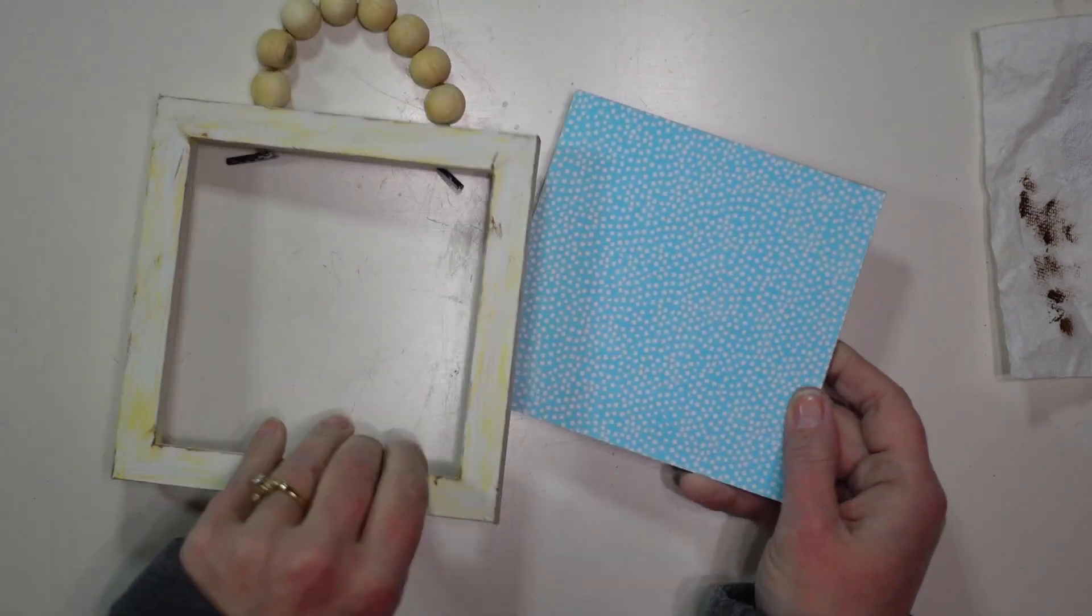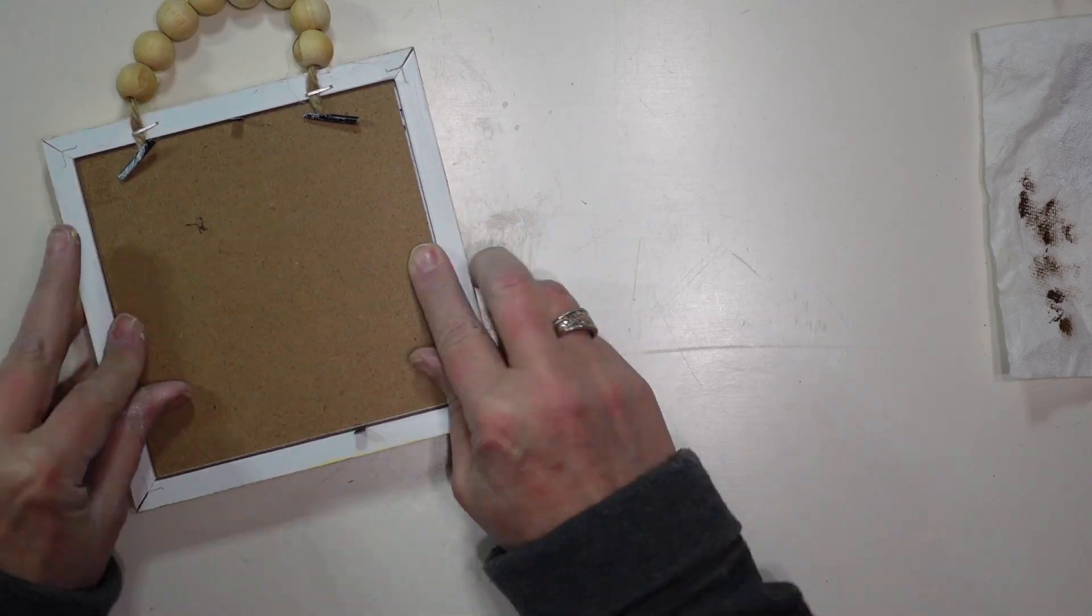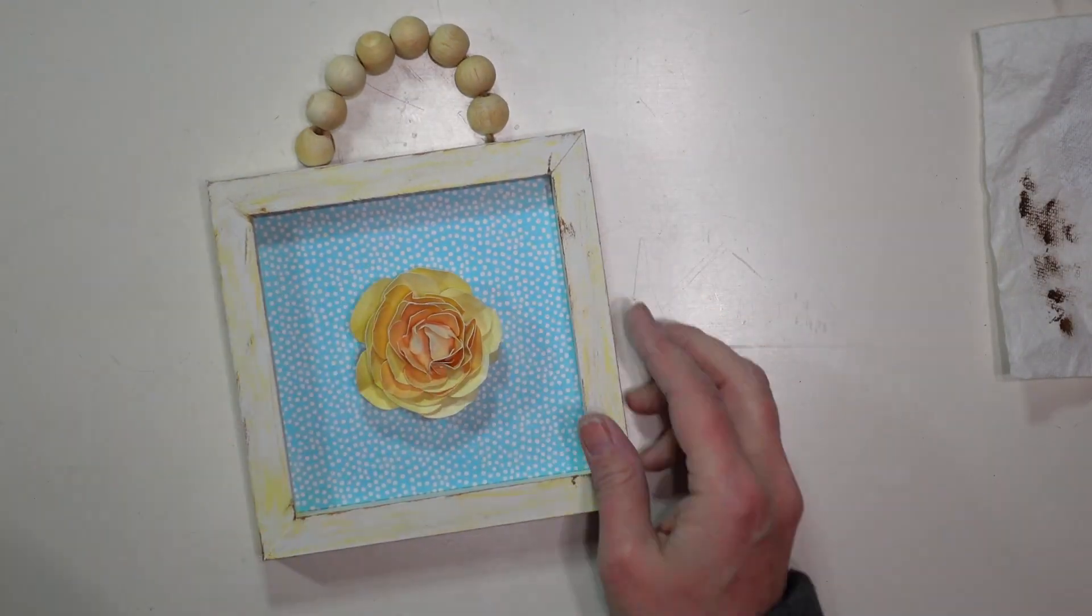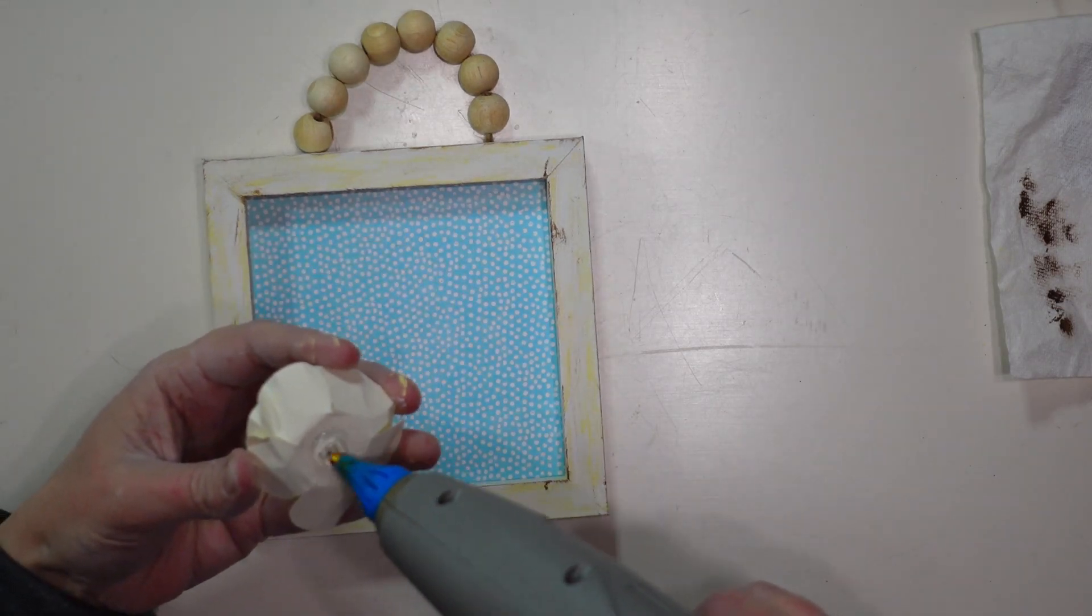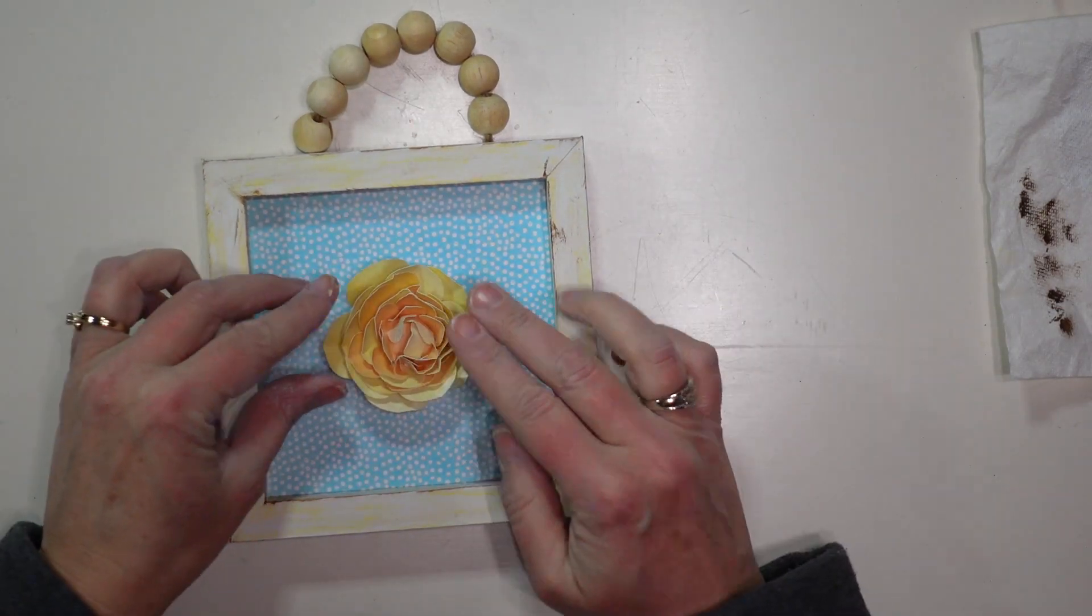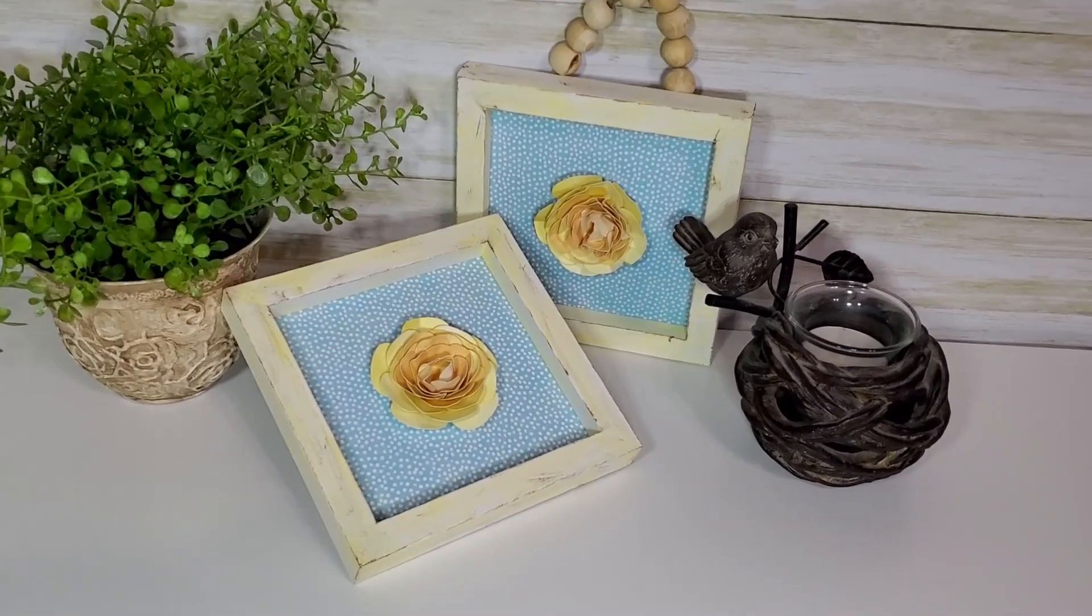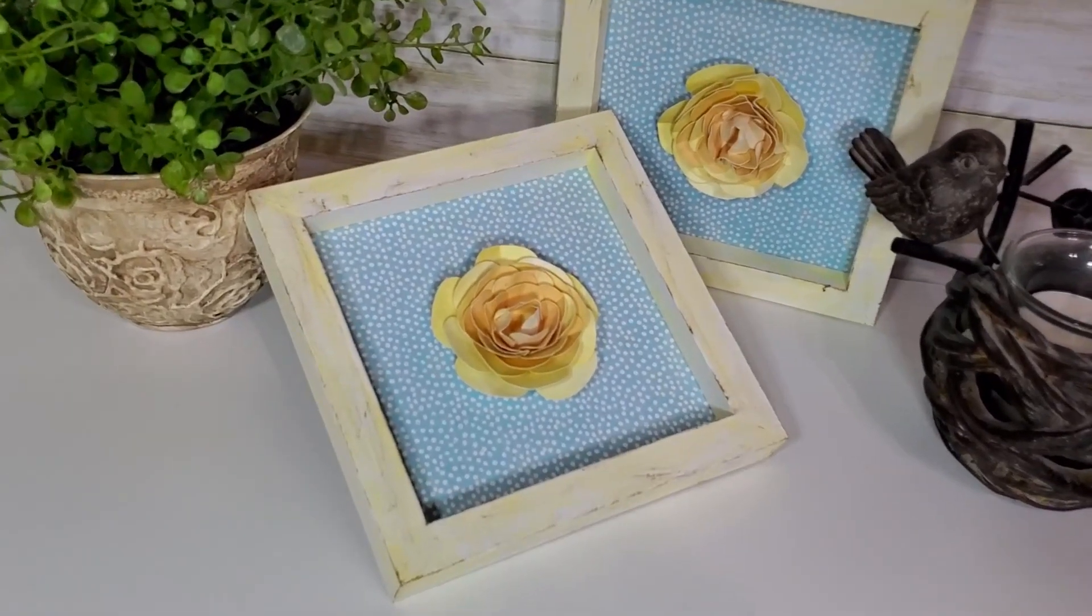Then I will add that right back into the picture frame and glue my flower to the center and this piece is done. And I did make a set of two of these and I think they turned out beautifully. I love how easy the Cricut made it to make these paper flowers.